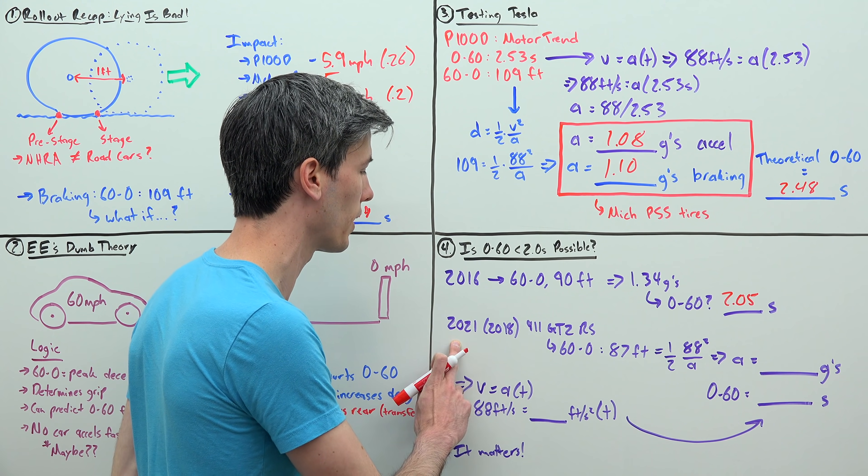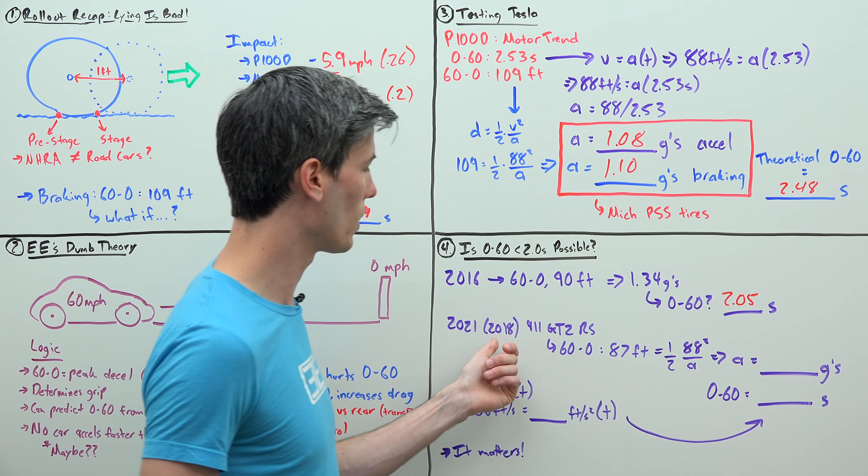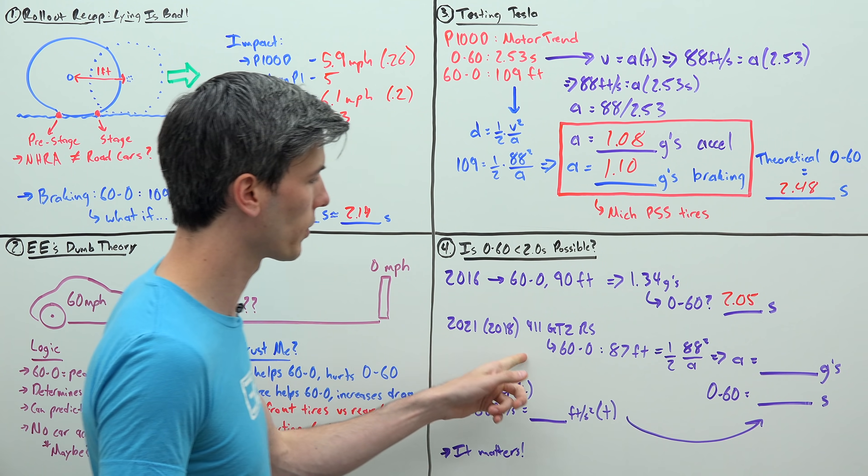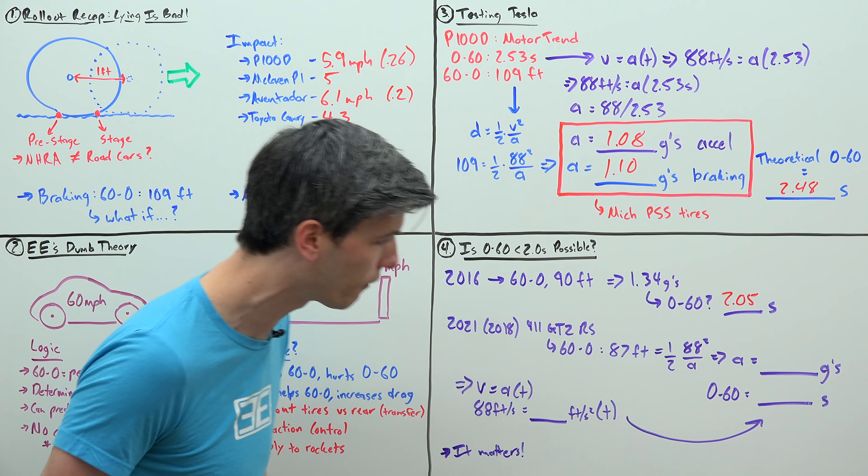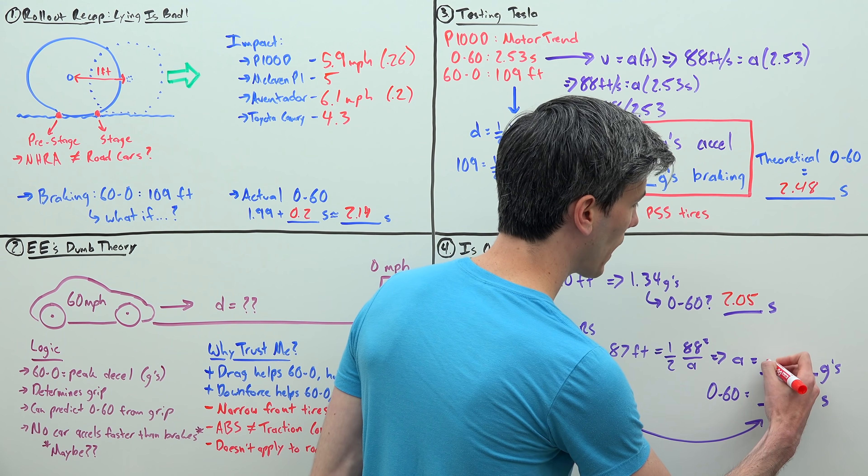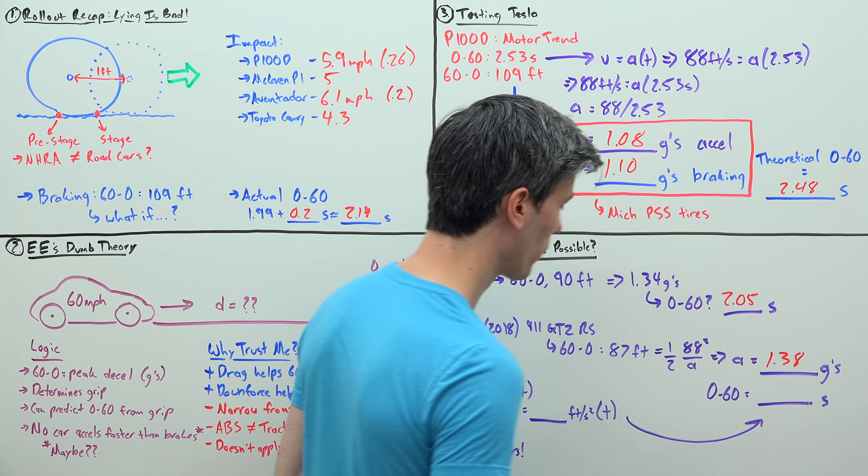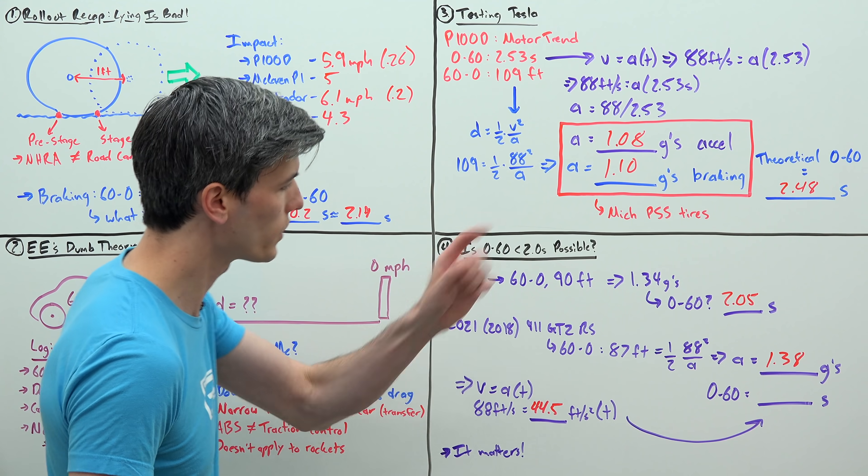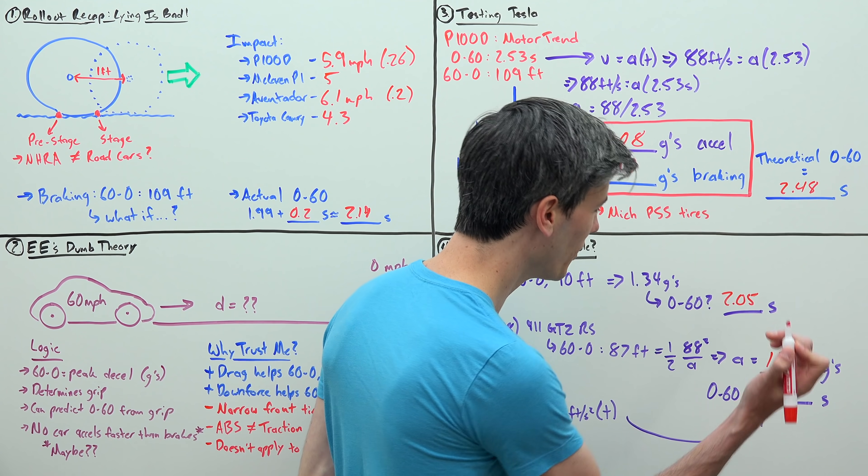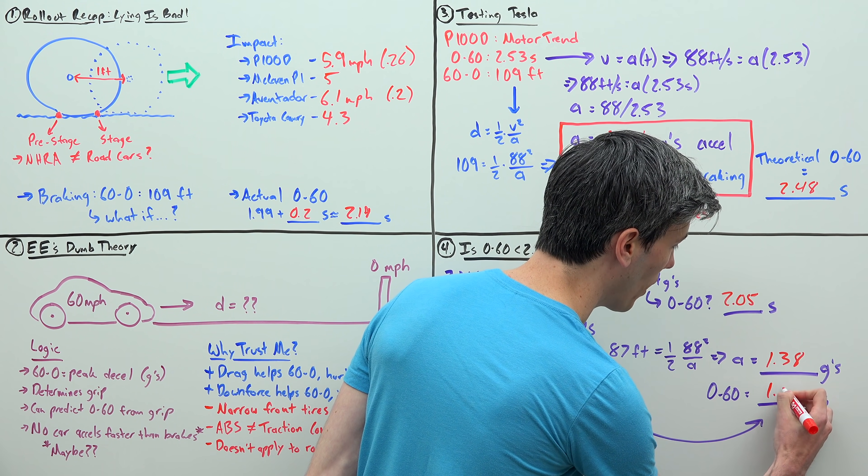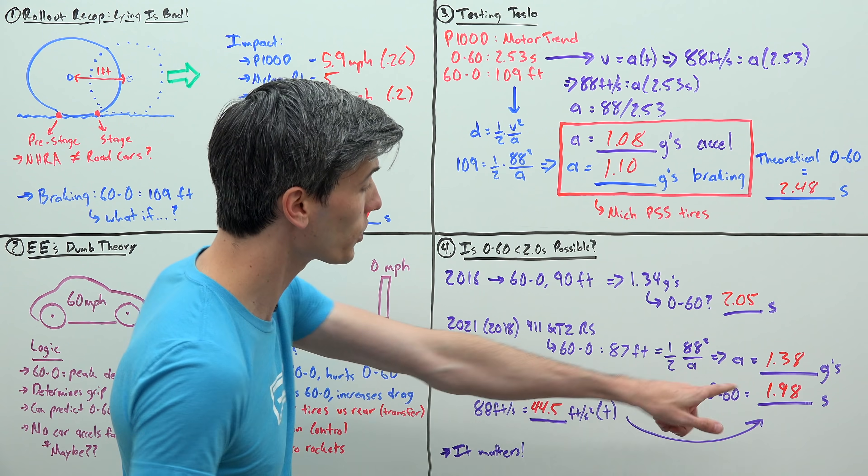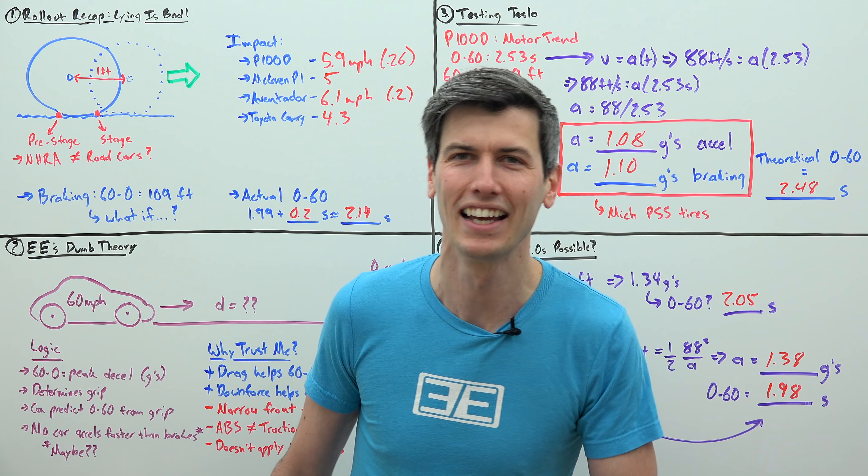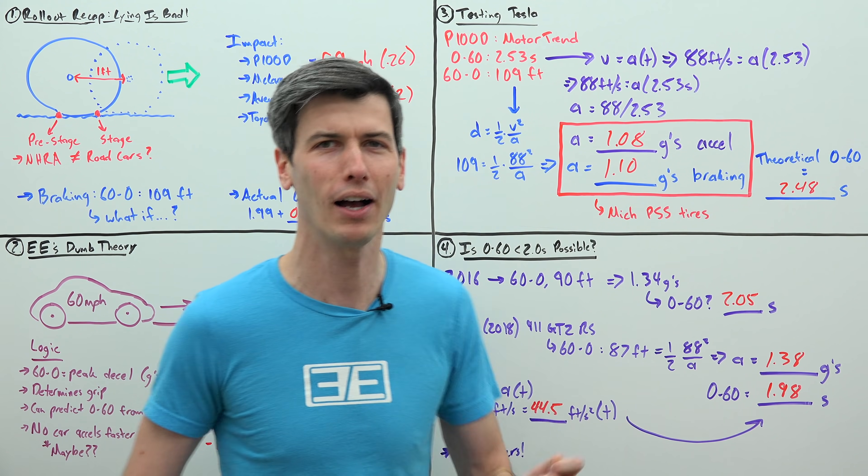So actually, if I were to predict today, what is the best possible 0-60? Well, a 2018 Porsche 911 GT2 RS was able to stop from 60 to 0 in just 87 feet. You can do the math on that. That gives you an average acceleration of 1.38 g's or 44.5 feet per second squared, which gives you a theoretical 0 to 60 time of 1.98 seconds, which is very cool because that's under two seconds.